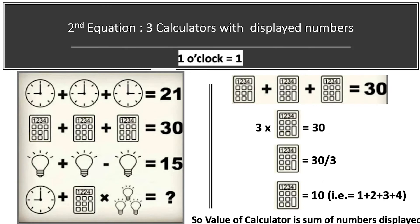Jumping to our second equation. We have 3 calculators with the same displayed numbers, so the equation becomes 3 times calculator equals 30. Therefore, calculator equals 30 divided by 3, which is 10. Looking at the numbers displayed on the calculator and summing them: 1 plus 2 plus 3 plus 4 equals 10. So the value of the calculator is the sum of numbers displayed on it.